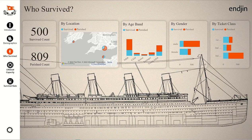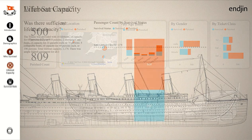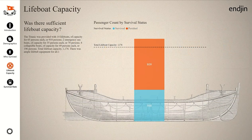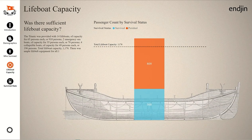Here we can see who survived and who perished. The perished count is marked in red whilst the survived count is marked in blue. From the data we can see that there was not enough lifeboat capacity to save everyone who lost their lives that night, even with collapsible lifeboats.